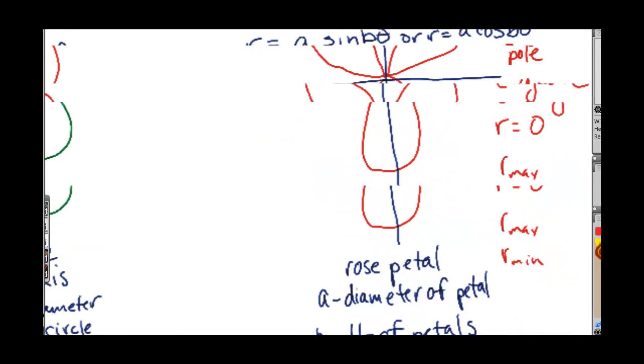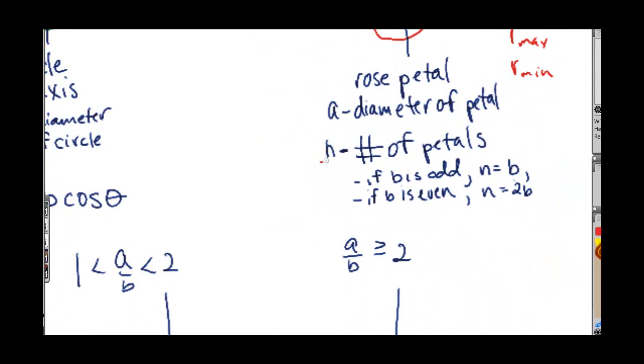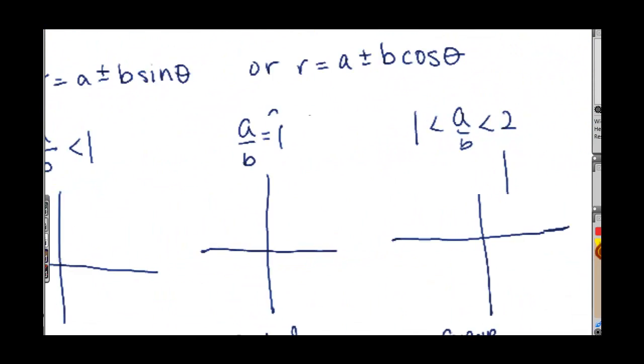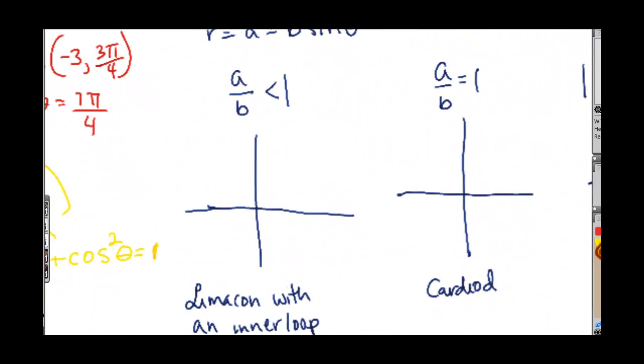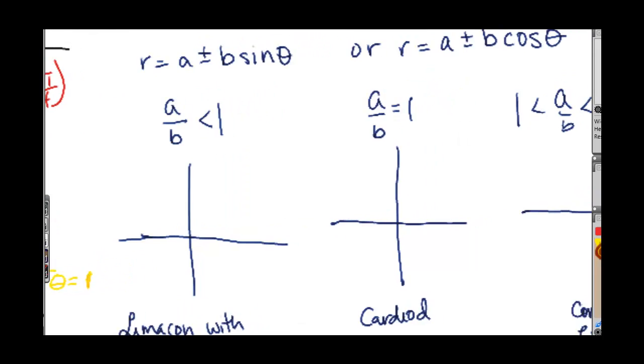And the number of petals depends on what b is up here. This b value, if it's odd, and n is the number of petals, so n, if b is odd, n is equal to b. But if it's even, that b value, then you have to double it to get the number of petals. Again, this is just a conceptual video. Try to just see the big picture here. You're probably going to need to rewind and pause and get an idea of what's going on and let this stuff sink in.